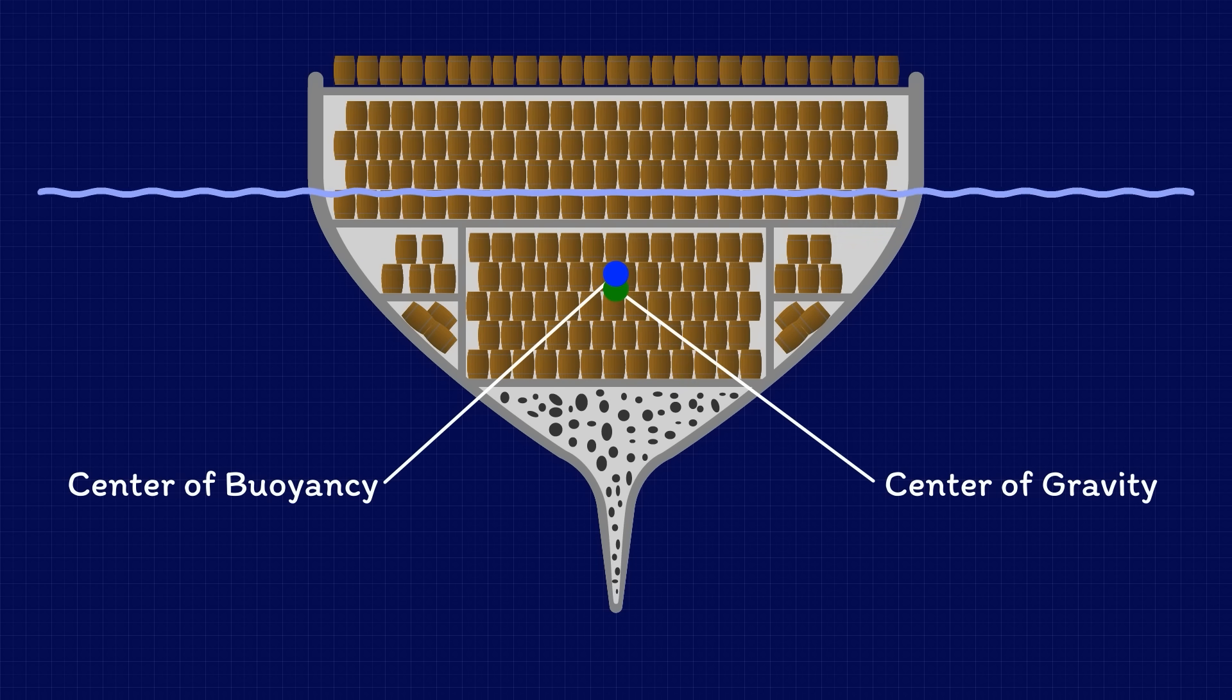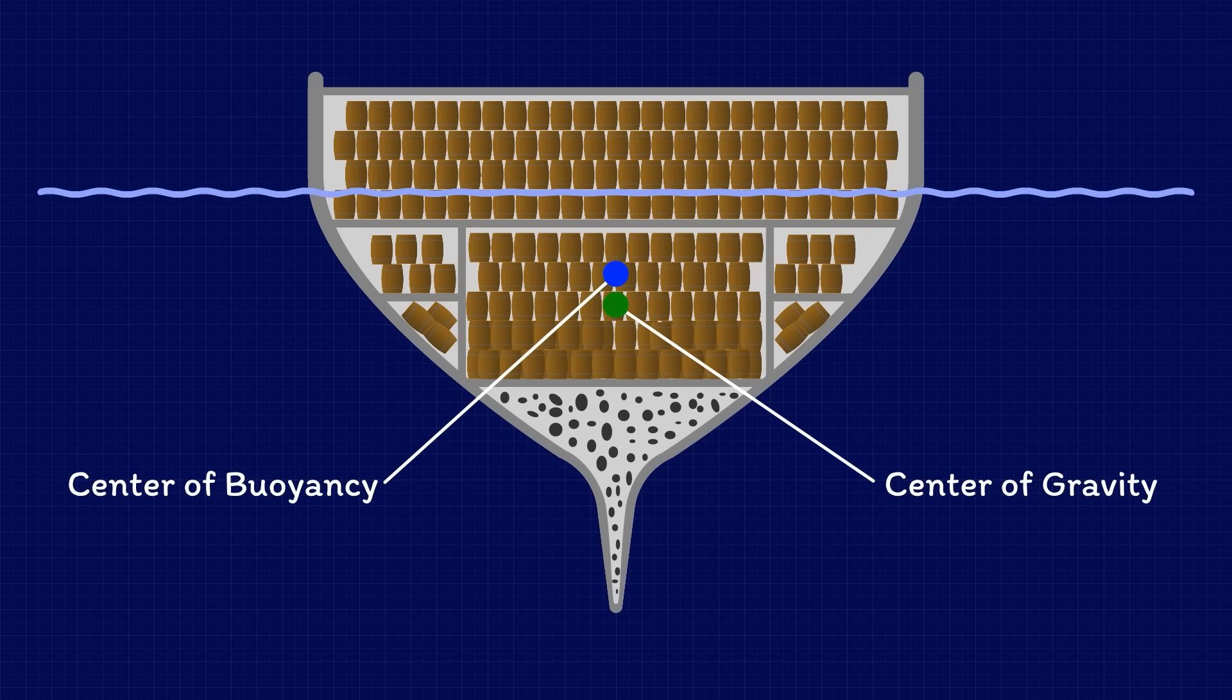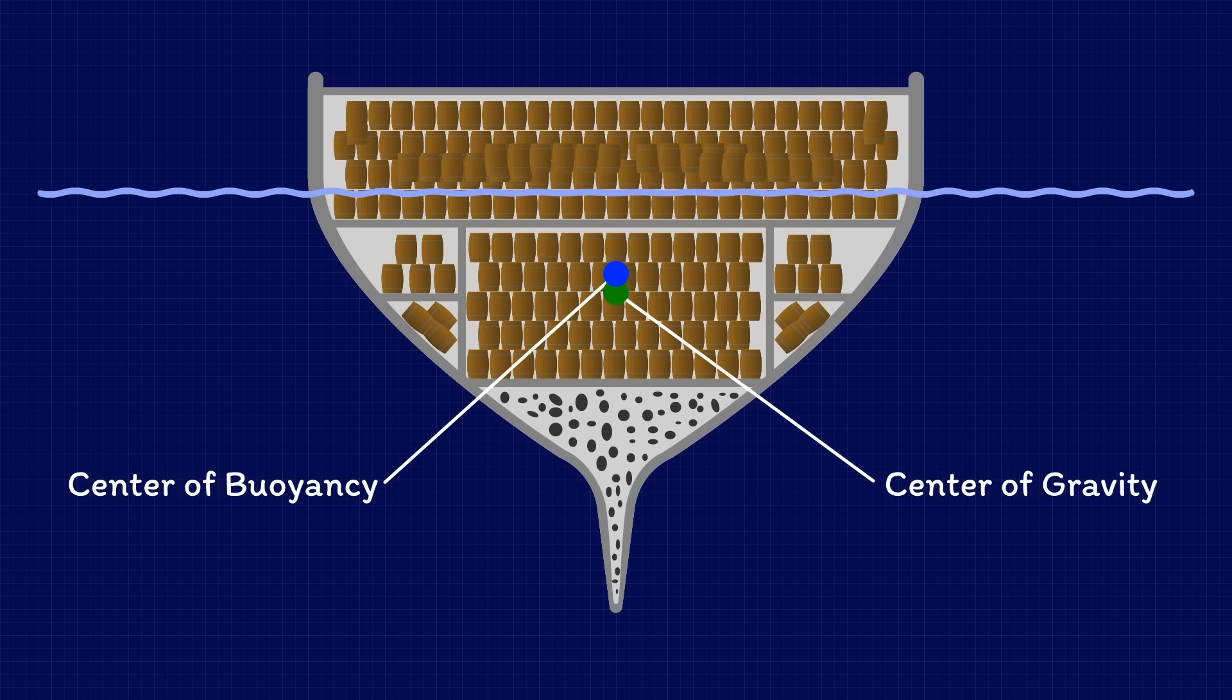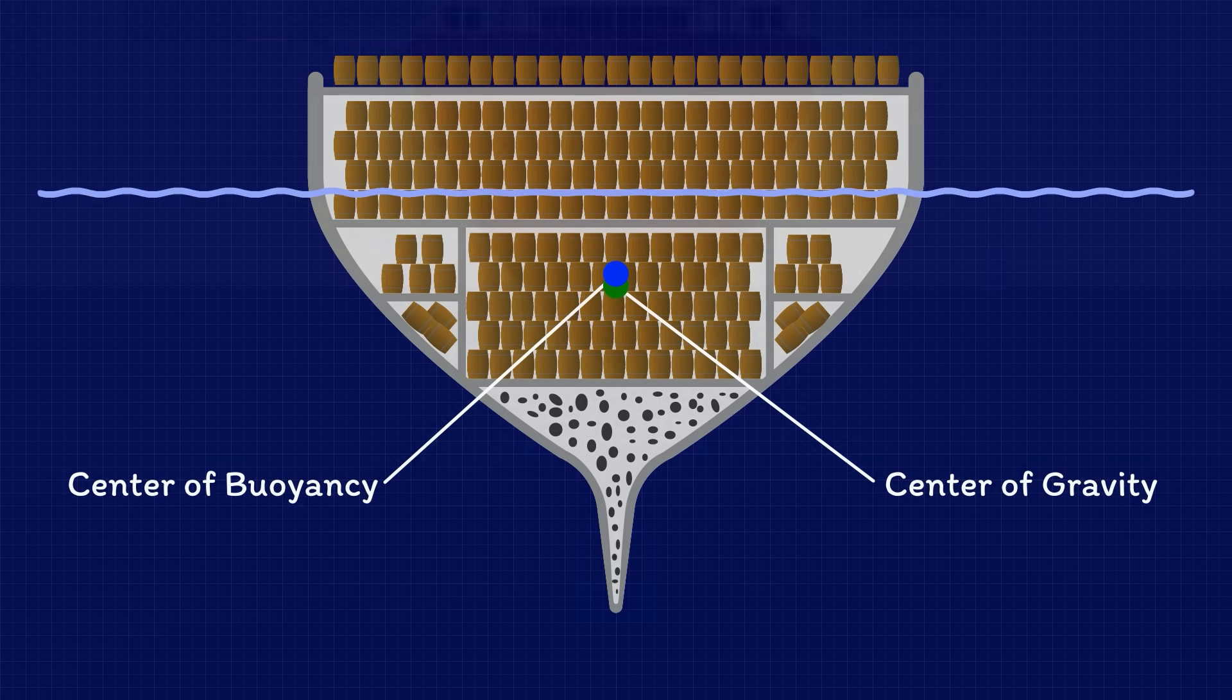I'm sure you can already see the problem. The more weight you add up high, the higher the centre of gravity and the smaller the separation between the centre of buoyancy and the centre of gravity. The ship becomes less stable.